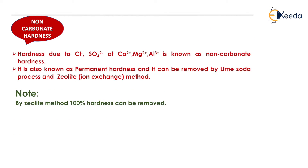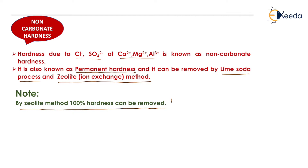Moving on to non-carbonate hardness: hardness due to chlorides and sulphates of calcium, magnesium, and aluminium is known as non-carbonate hardness. It is also known as permanent hardness and can be removed either by the lime-soda process or by the zeolite (ion exchange) method. The zeolite method can remove 100% of hardness — it is the best method, with 100% efficiency.